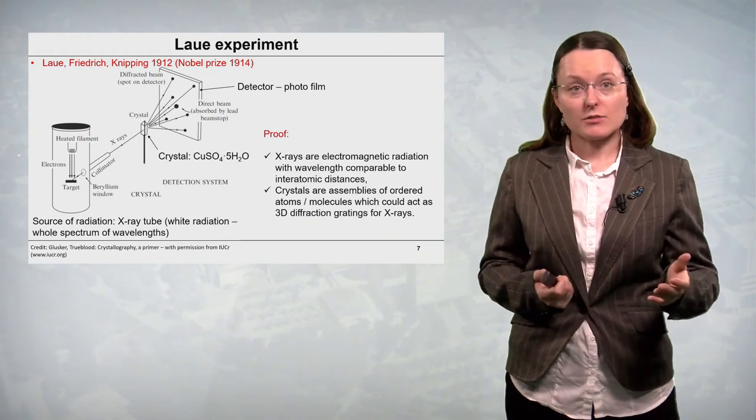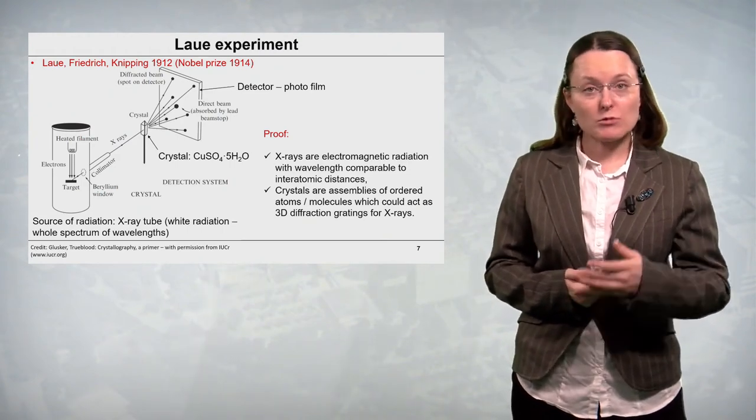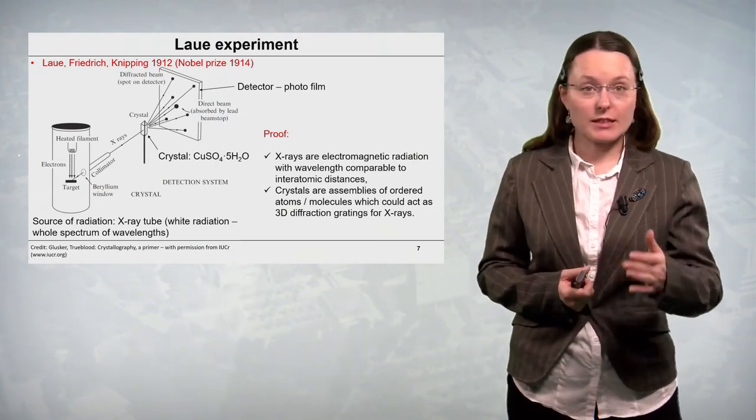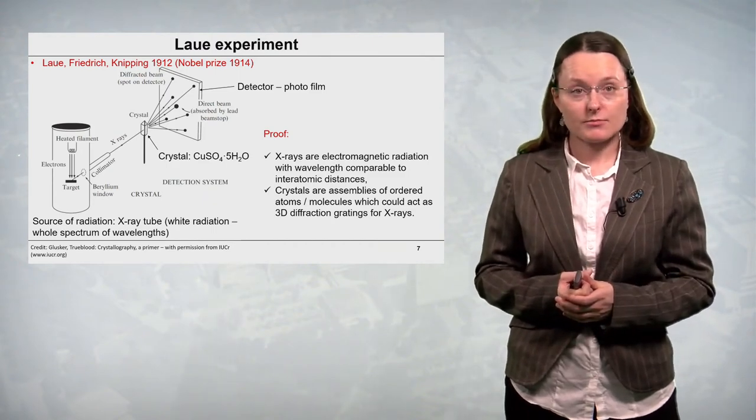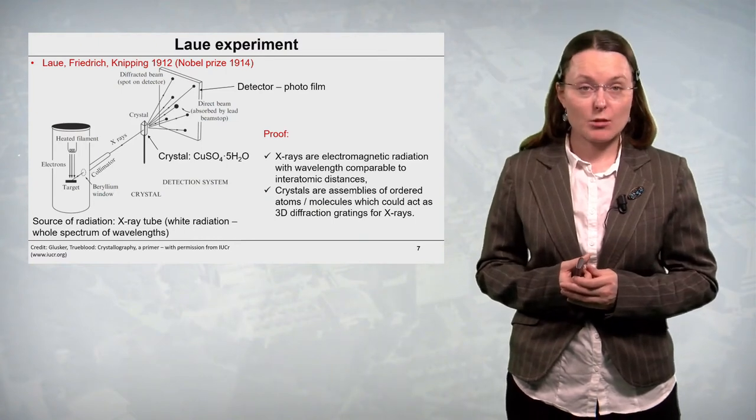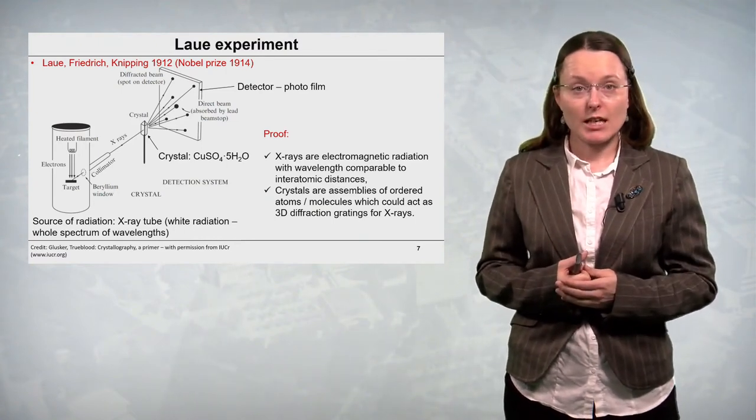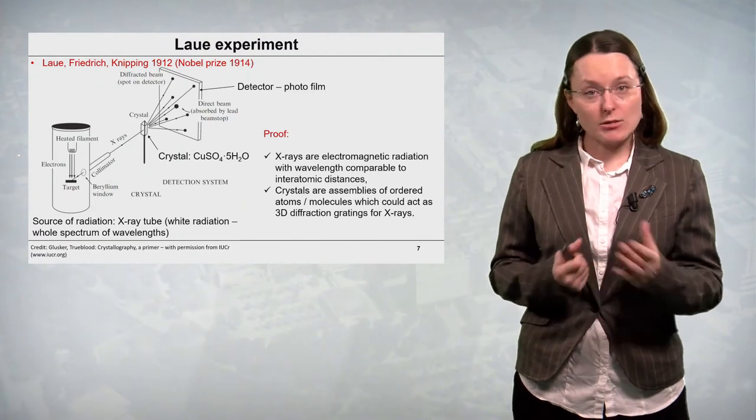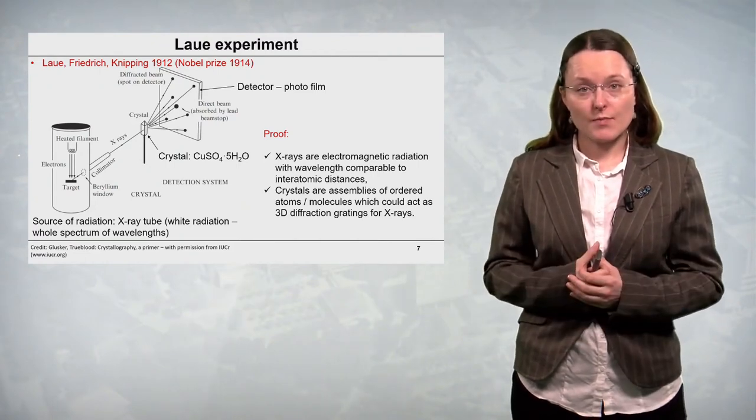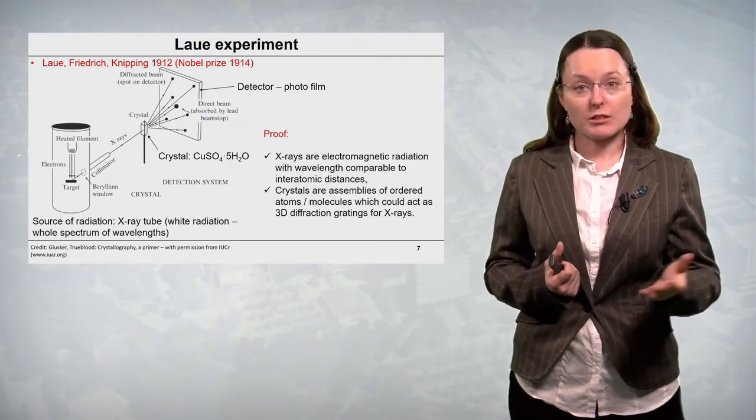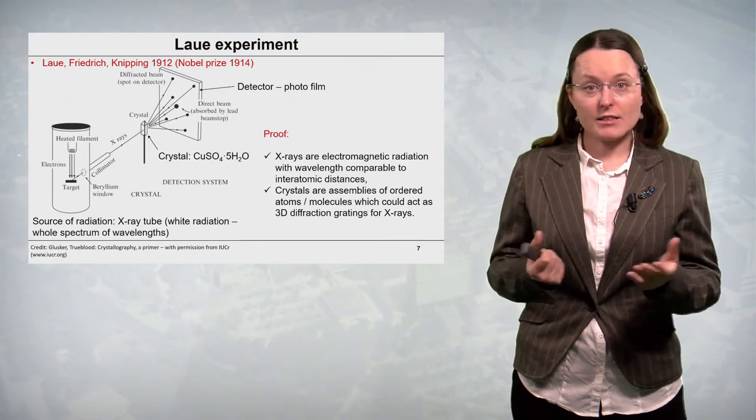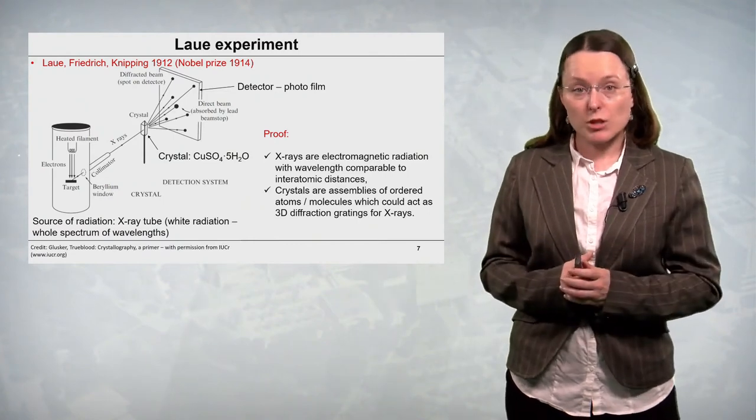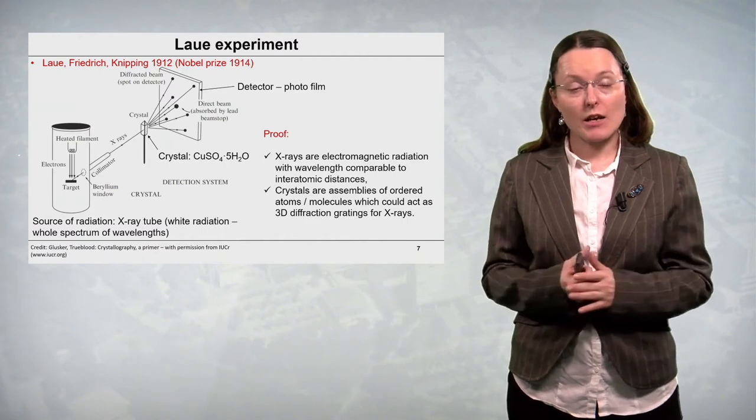They obtained diffracted beams and detected them with a photofilm. So on the resulting diffraction pattern there were many spots of different intensities called reflections. And this was a very important experiment, there was a Nobel Prize for it in 1914. It allowed to prove two very fundamental facts. First of all, that X-rays are electromagnetic radiation with wavelength which is comparable to interatomic distances. Secondly, that crystals are indeed assemblies of ordered atoms or ions or molecules which could act as three-dimensional diffraction grating for X-rays.